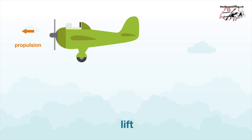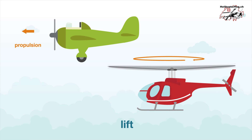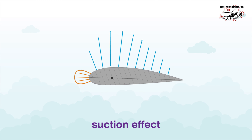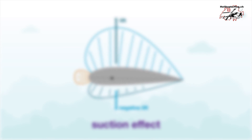This is accomplished through forward speed in fixed-wing aircraft and through the rotational speed of the rotor in helicopters. The upper curvature of the profile causes a higher airflow rate, thereby leading to a reduction in pressure. Suction or negative pressure is generated on the surface of the blade.